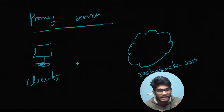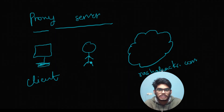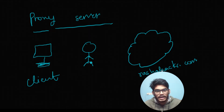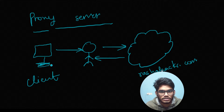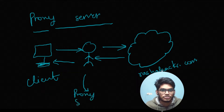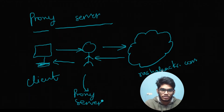Between client and server, you place one node — not a person but a software or computer — in between the client and server. This node can see everything coming in from the client going to the server, and then coming back from the server going to the client. Everything that goes from here to here and here to here, the proxy server knows. That is the concept of a proxy server — it can see all those requests and responses going through the network.